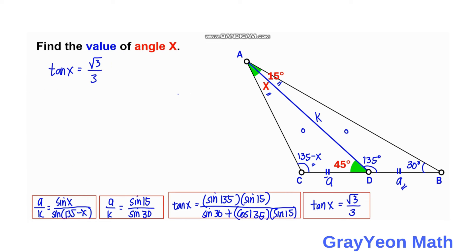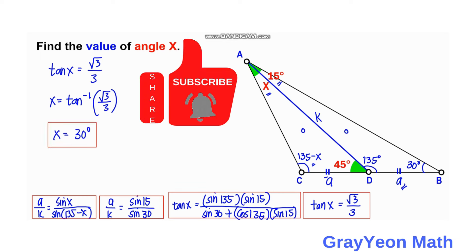Now for the final step: tangent X equals root 3 over 3, so X equals arctan(root 3 over 3), which gives X equal to 30 degrees. That is our answer for the second method. Thank you for watching to the end of the video. Please like and subscribe, and hit the bell icon to be updated for more math videos.